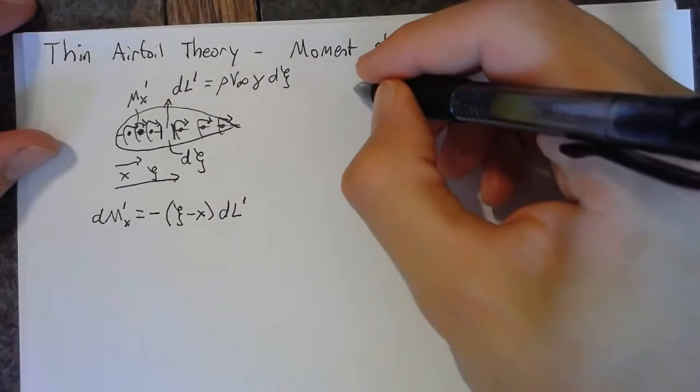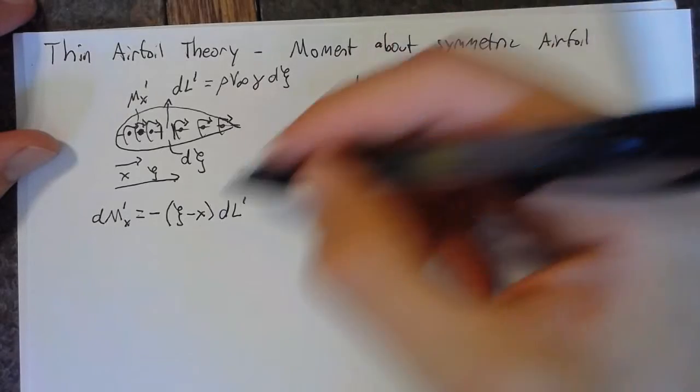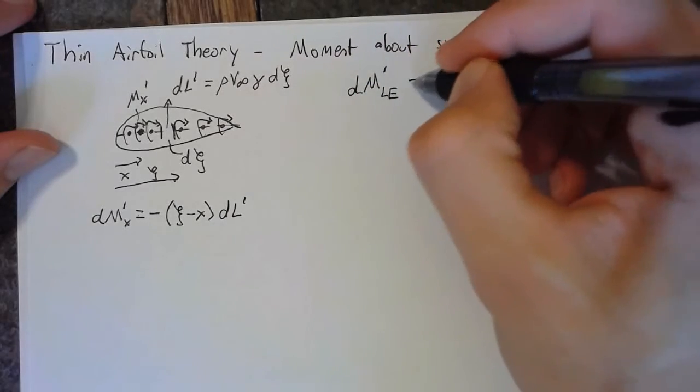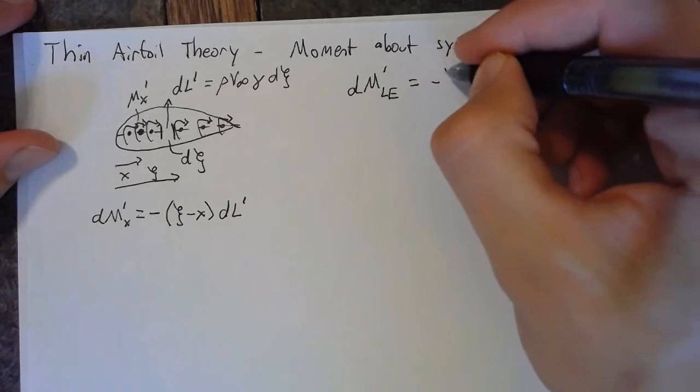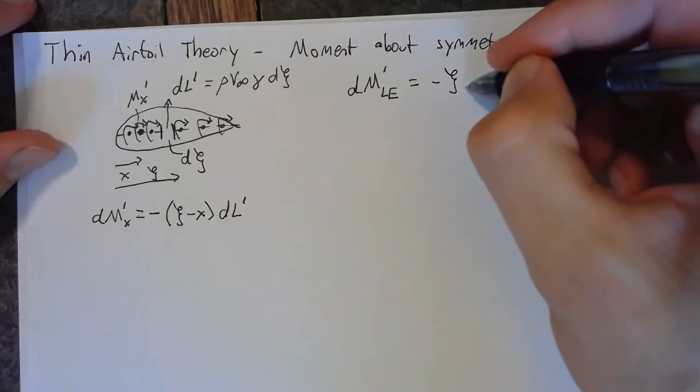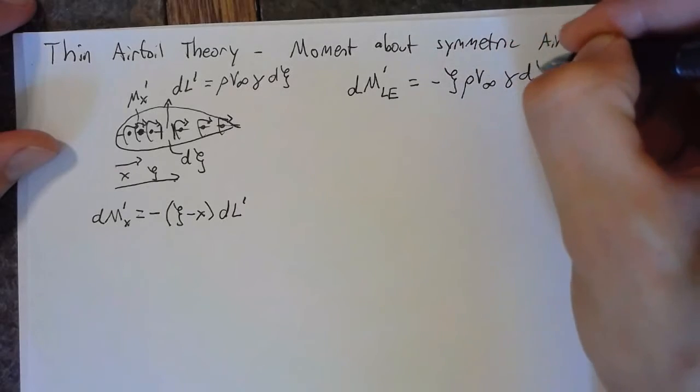If we're interested specifically about the leading edge, then our x term is going to be 0, which means that this will simply be -ξ dL, or ξ ρV∞ γ dξ.